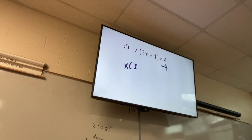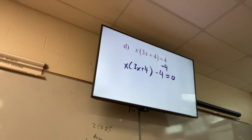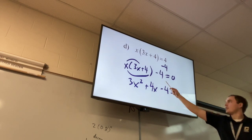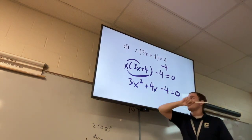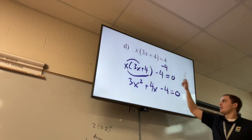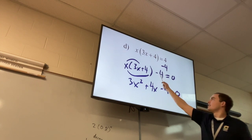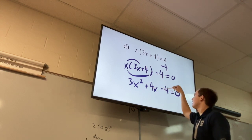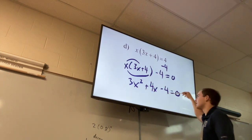So we have x times (3x + 4) minus 4 equals zero. You've got to distribute the x. So 3x² + 4x − 4 = 0. You have to get it into standard form. You want the equation factored completely, so you've got to get this minus 4 into the factoring. You distribute the x out and then refactor so that everything is included.